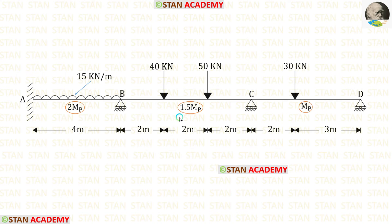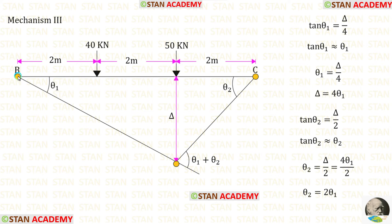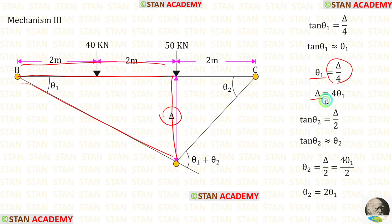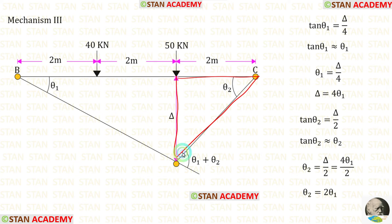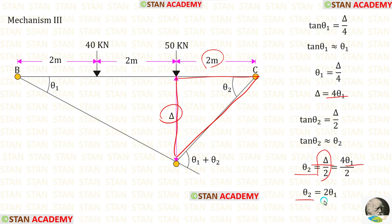Now we are going to make the third mechanism. In this mechanism, in span BC, the third plastic hinge occurs under the point load 50 kN. In the left triangle, theta 1 = delta upon 4, so delta = 4 theta 1. In the right triangle, theta 2 = delta upon 2. Substituting delta = 4 theta 1, we get theta 2 = 2 theta 1.